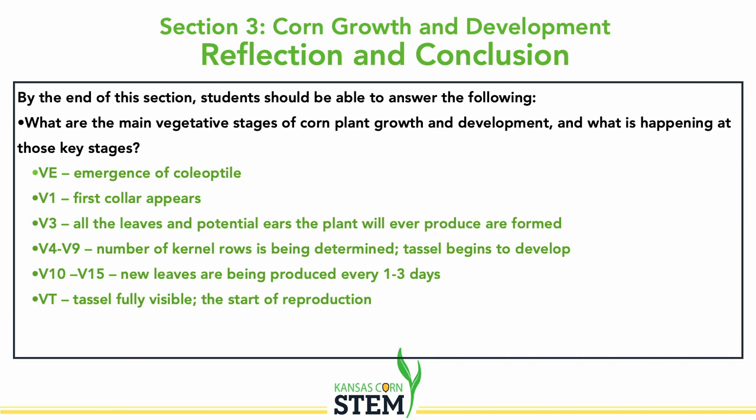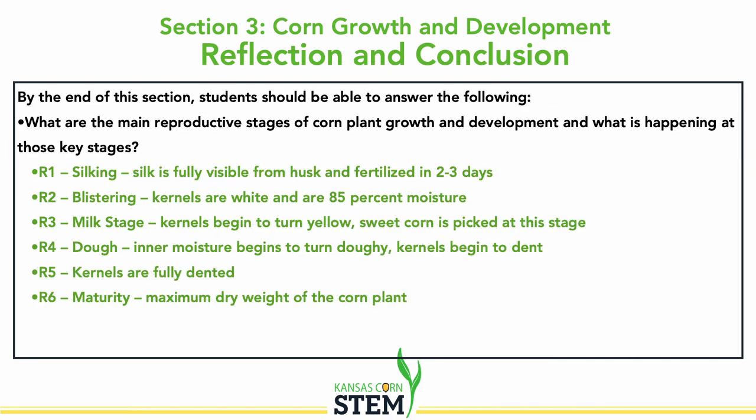Reflecting on section three — corn growth and development — we want kids to recognize each stage of the corn growing process: from emergence to the first collar, all the way through the reproductive stages. The reproductive stages are really cool: you see the silking, blistering, milk, and dough stages, then it starts to dry and go to maturity where we harvest most of our corn. We harvest sweet corn at the milk stage — the R3 stage — which you have to do by hand, do it quickly, and put everything on ice to keep the sugars from turning into starches.